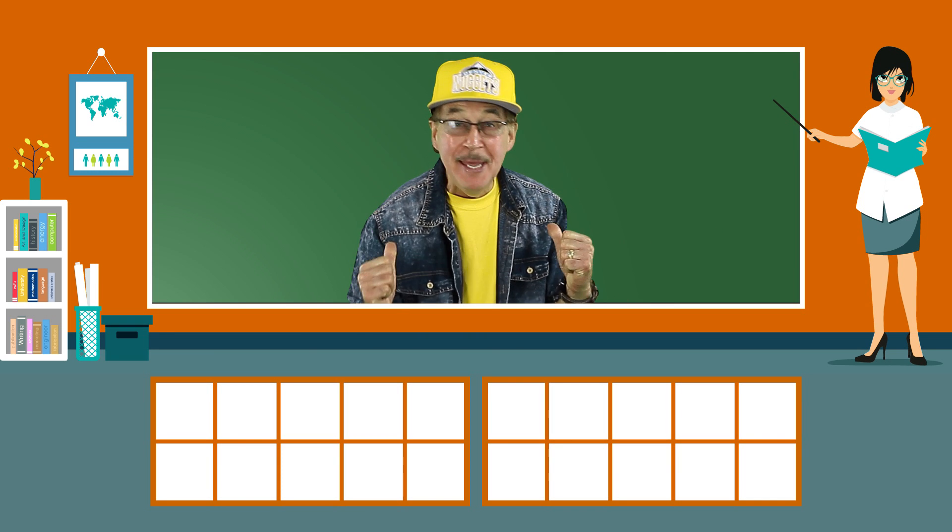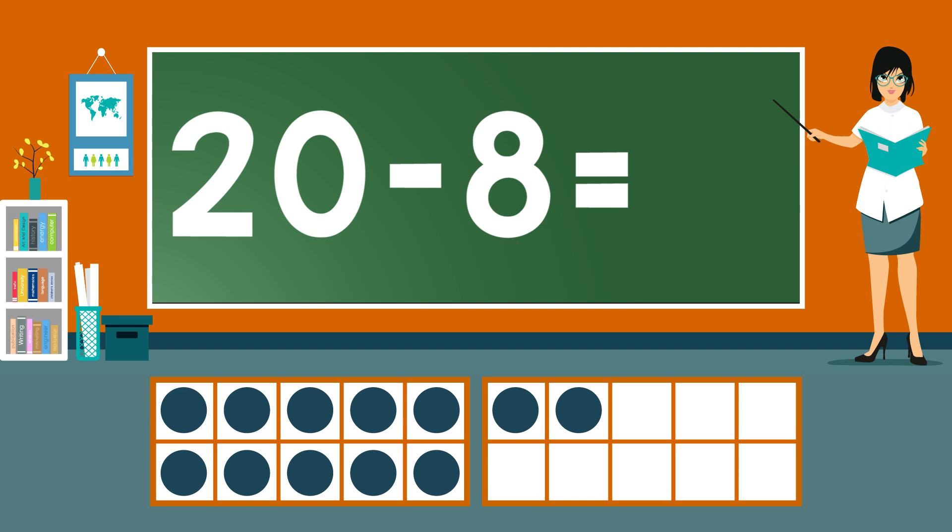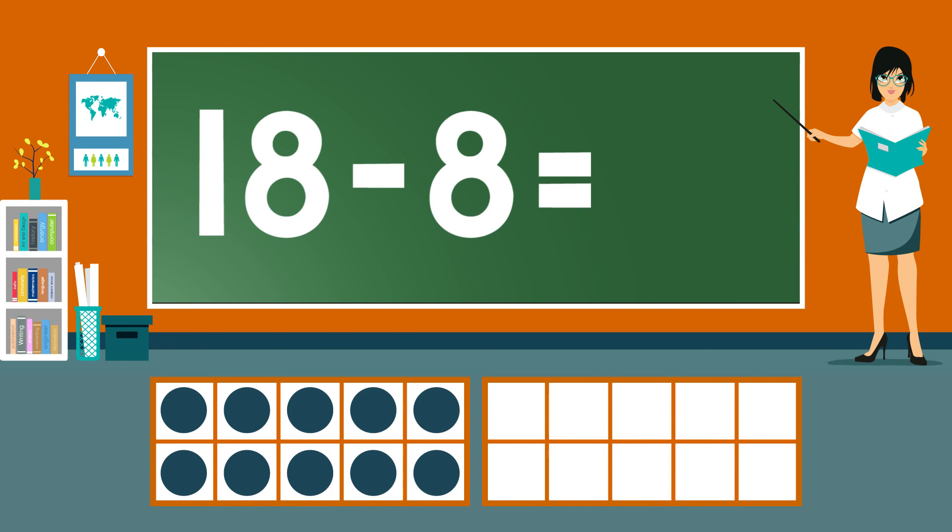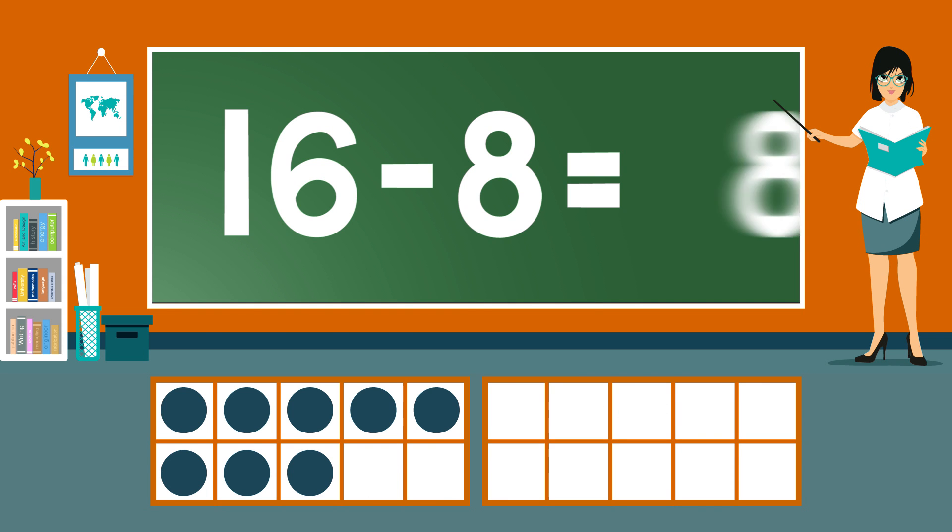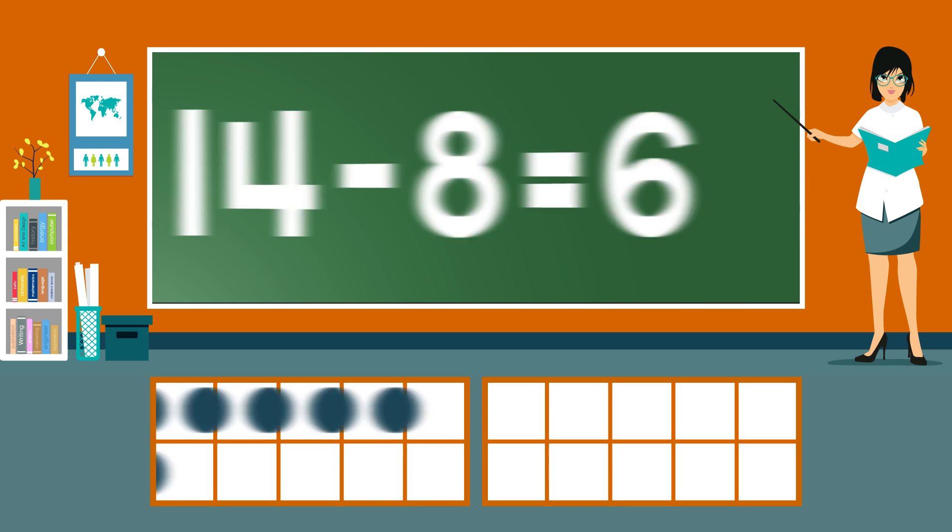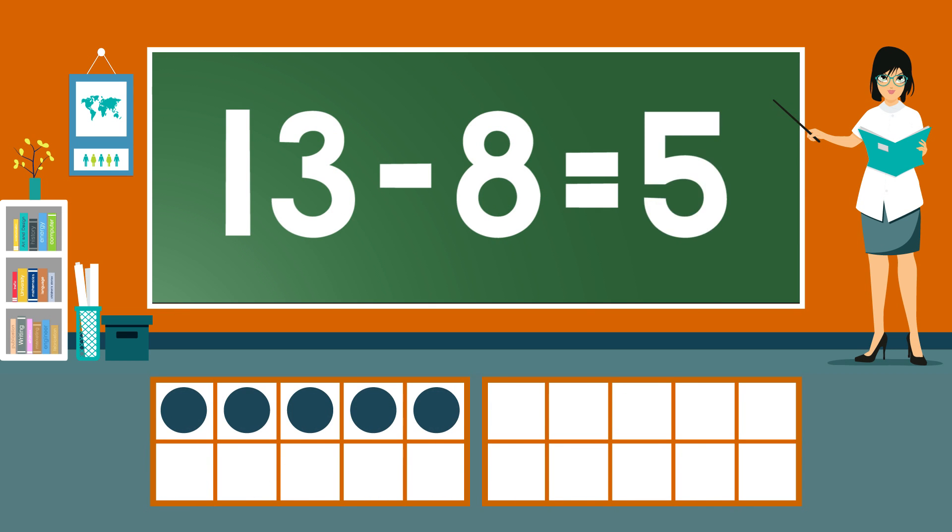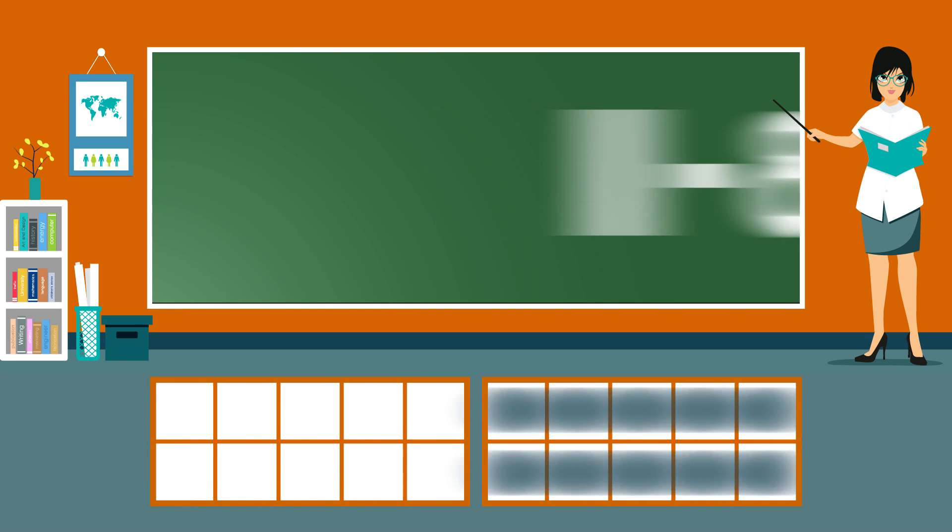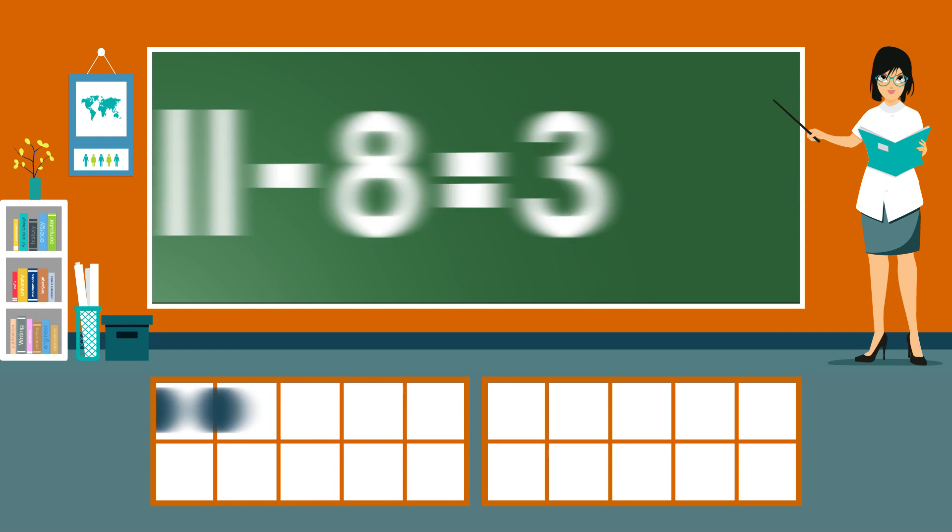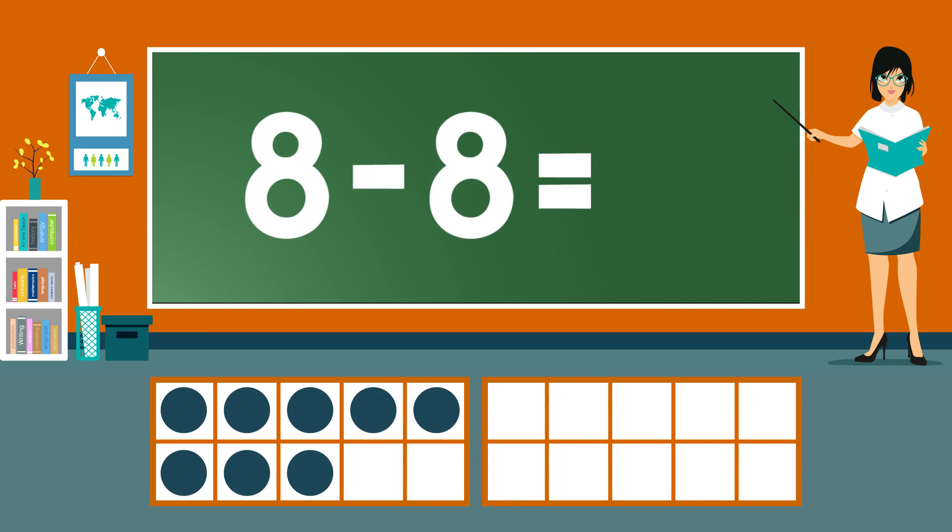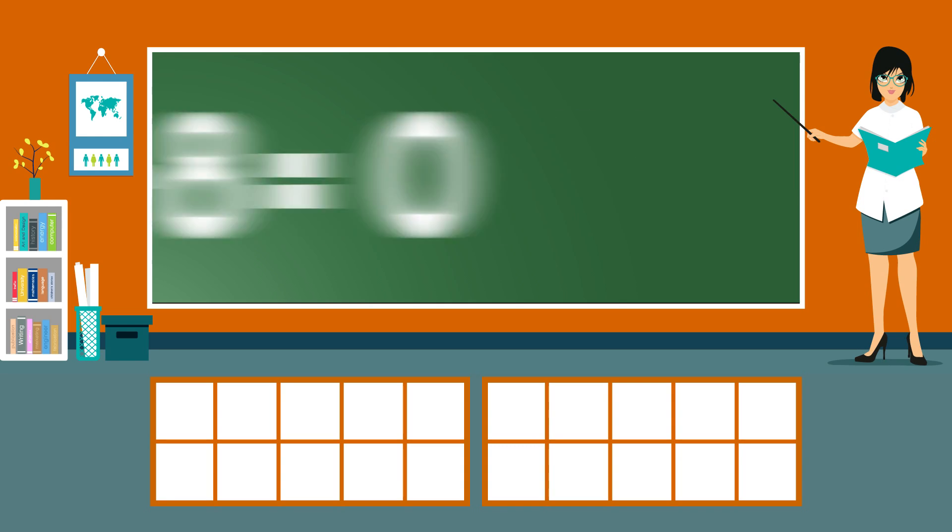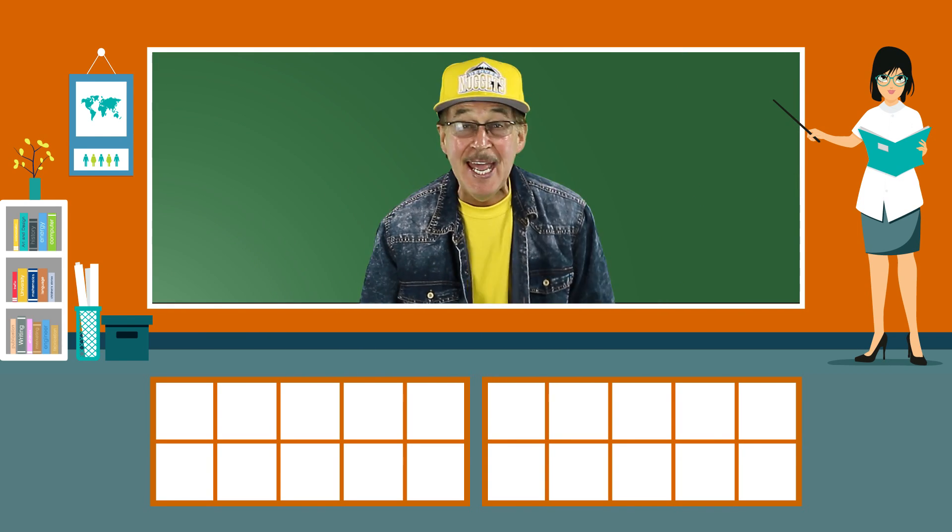Now you answer before me. 20-8 equals 12. 19-8 equals 11. 18-8 equals 10. 17-8 equals 9. 16-8 equals 8. 15-8 equals 7. 14-8 equals 6. 13-8 equals 5. 12-8 equals 4. 11-8 equals 3. 10-8 equals 2. 9-8 equals 1. 8-8 equals 0. Practice our subtraction facts.